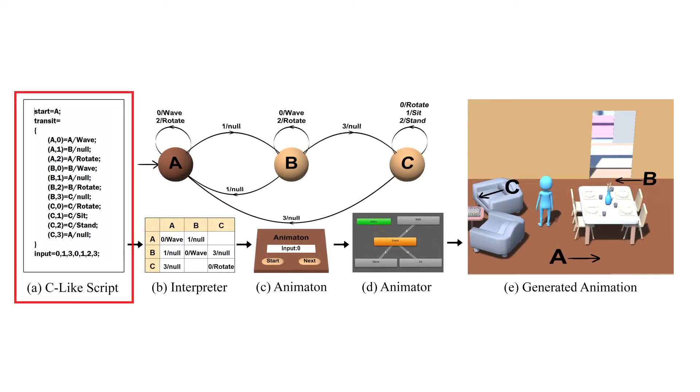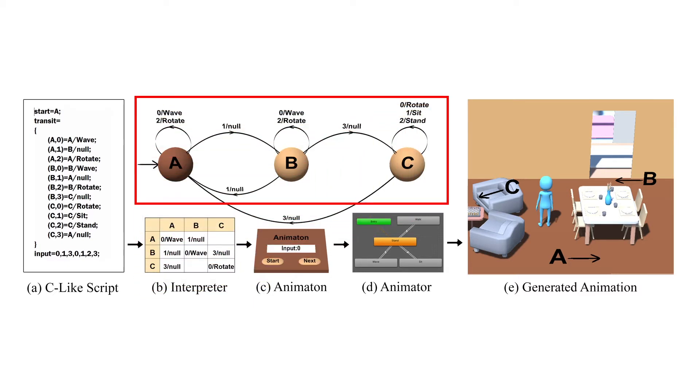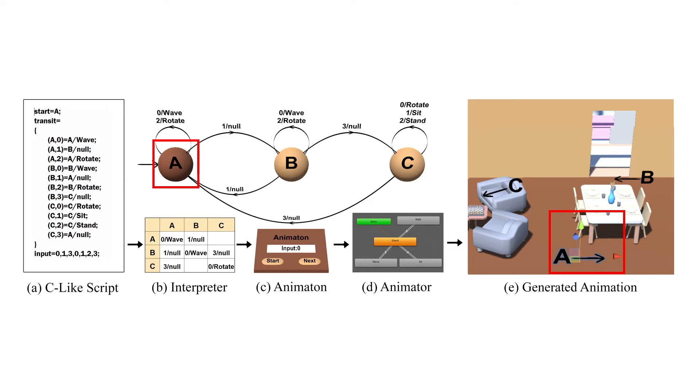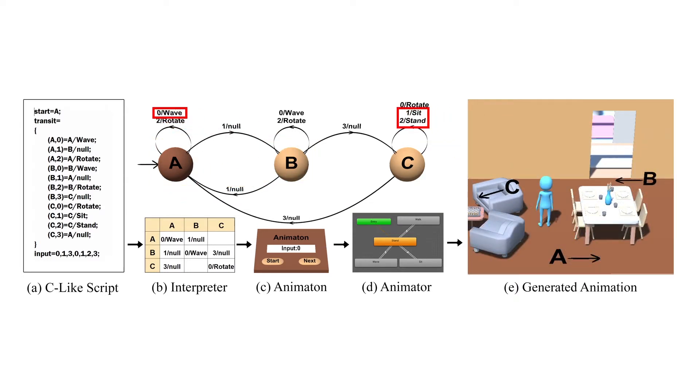Given the C-like script to define the animation logic, we implement an interpreter for this script to generate a deterministic finite automaton, called animating, to specify the transitions between positions, rotations, and triggers for each virtual character.